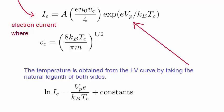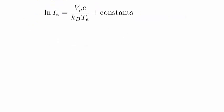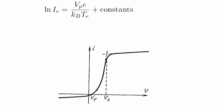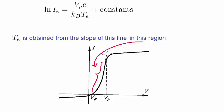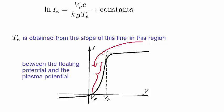Let's look at the IV curve once again. We can obtain the electron temperature by using this equation, and, as you can see, the electron temperature can be taken from the slope of this line, but it has to be in this region of the IV curve, between the floating and plasma potentials.